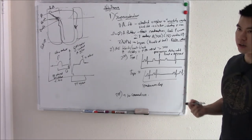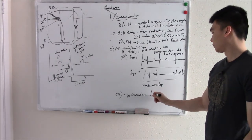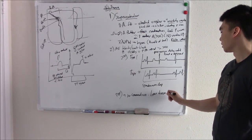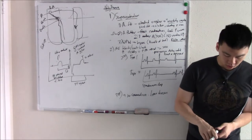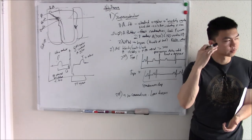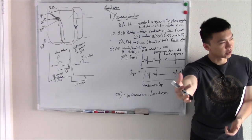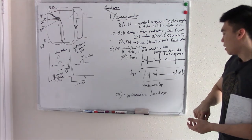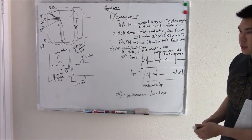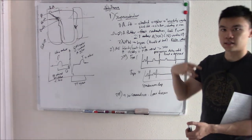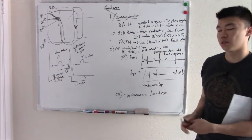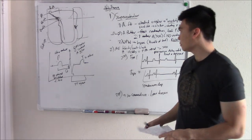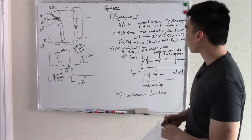One important cause of third degree heart block is Lyme disease — a tick-borne illness. Really late-stage Lyme disease can affect your brain and your heart, causing third degree heart block. They like to test that a lot.